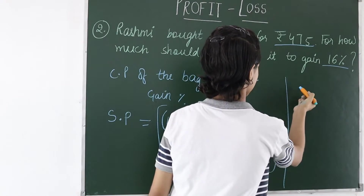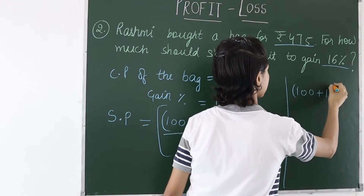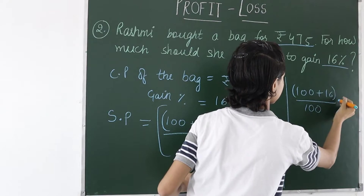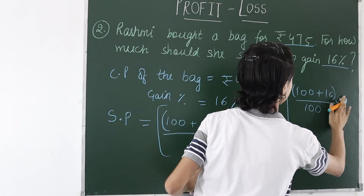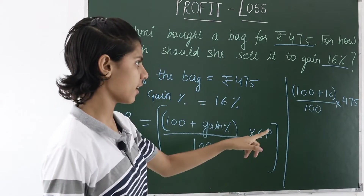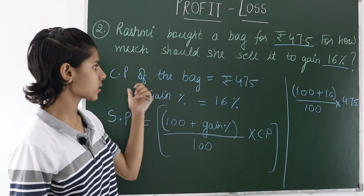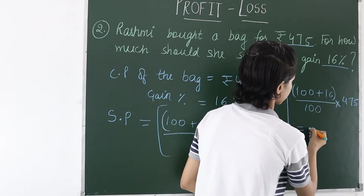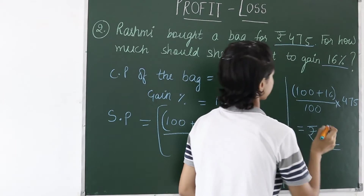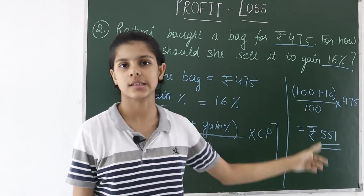Now we put in the values: (100 + 16) ÷ 100 × 475. That gives us 116 ÷ 100 × 475. After this calculation we get Rs. 551. So Rs. 551 is the selling price at which Rashmi should sell her bag to gain 16%.